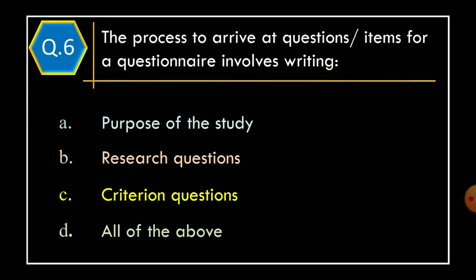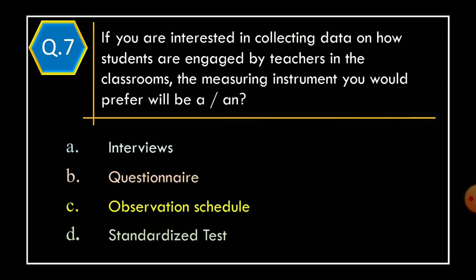Question 6. The process to arrive at questions or items for a questionnaire involves writing: Option A, Purpose of the study. Option B, Research Questions. Option C, Criterion Questions. Option D, All of the above. And correct option is Option D, All of the above.